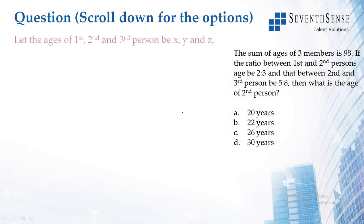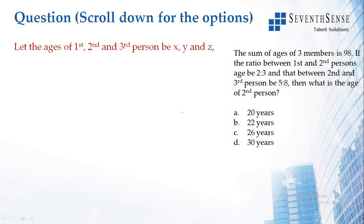Let the ages of first person, second person, and third person be x, y, and z respectively. The sum of their ages is 98, so x plus y plus z equals 98.